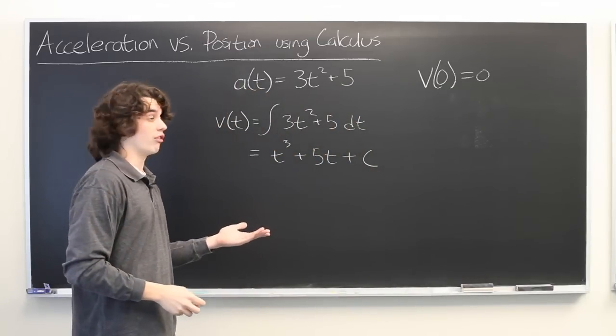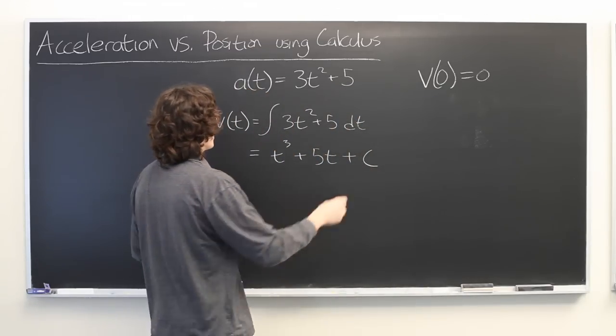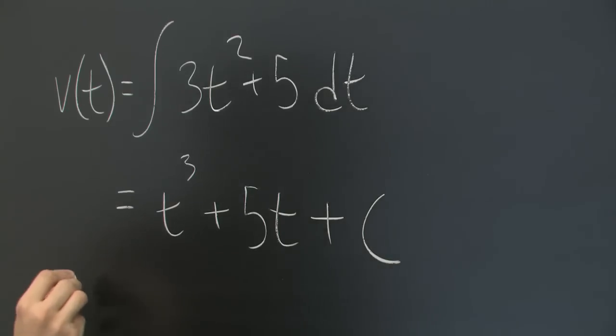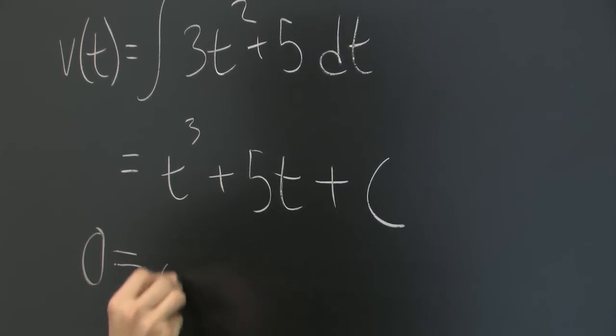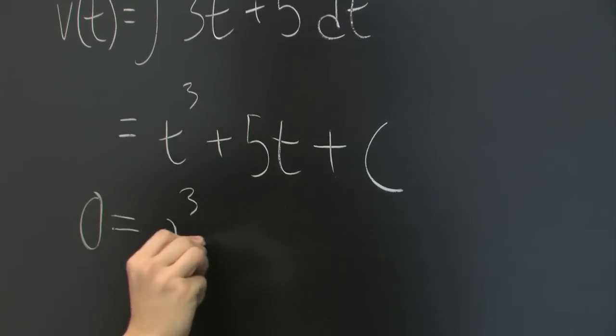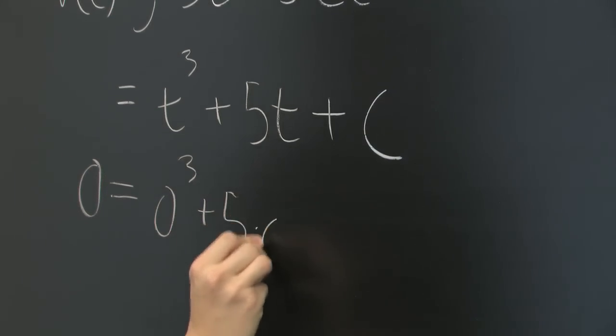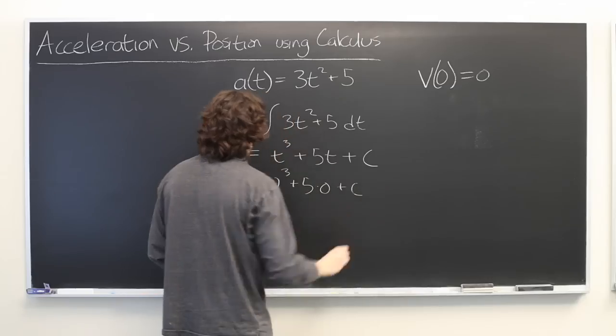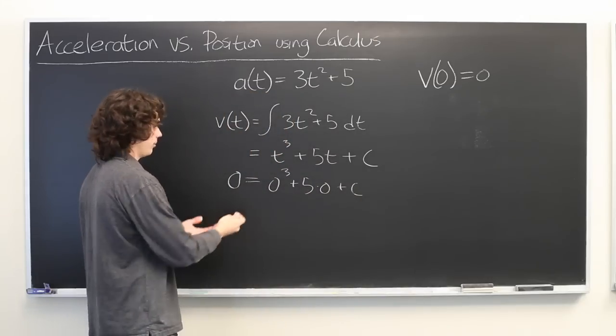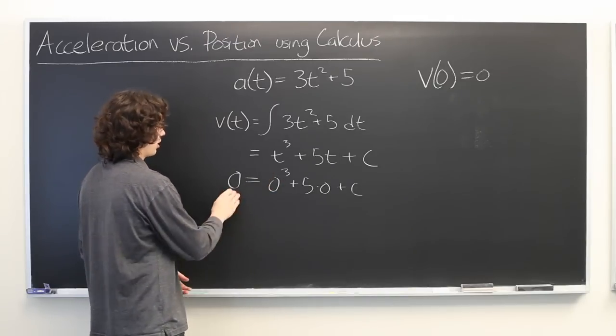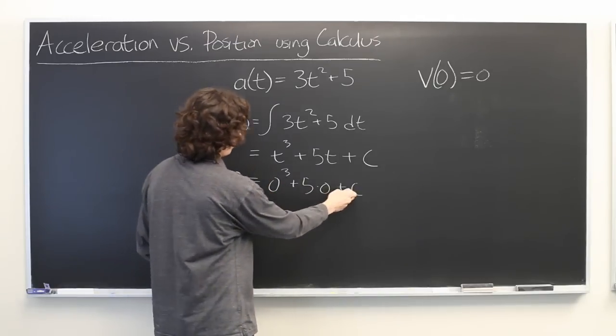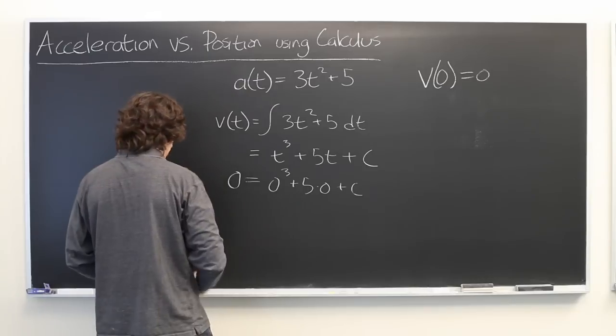So, assuming we're given such a piece of information, we can plug that in here. Let's see what we get. So, we get 0 equals 0 cubed, plus 5 times 0, plus c. Well, it's fairly clear here that c is just going to be 0, because 0 equals 0, plus 0, plus 0.